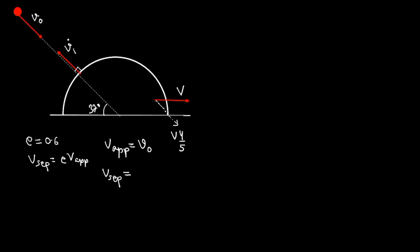So velocity of separation is 4V/5 plus V₁. Writing it with 0.6: 4V/5 + V₁ = 0.6 × V₀. Let us call this equation 1.